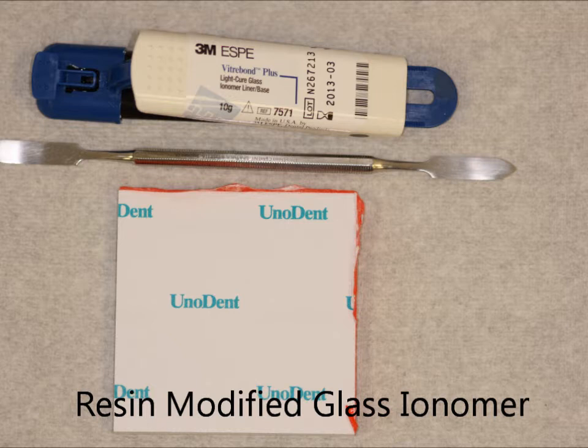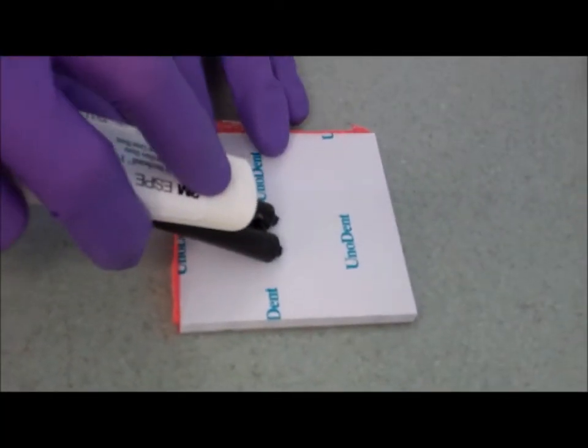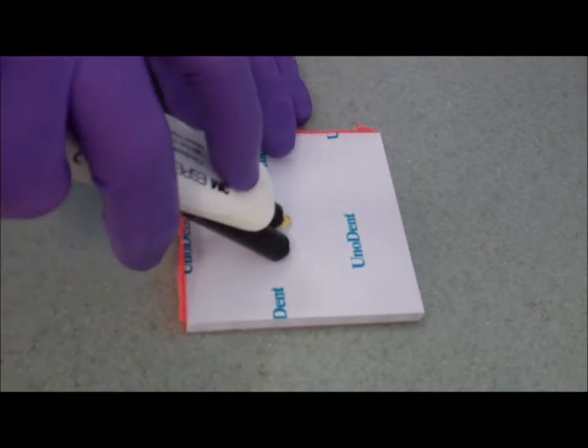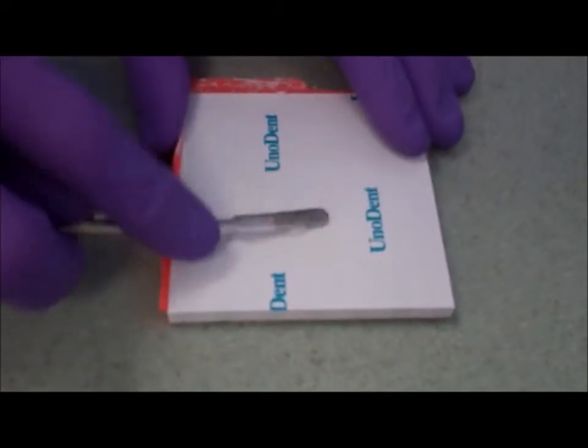Resin modified glass ionomer, this one in particular is used for lining materials. It comes in a cartridge. If you press the lever you'll get two equal amounts of liquids, one is an opaque white color, one is clear, and you just mix these together until you have an even color.